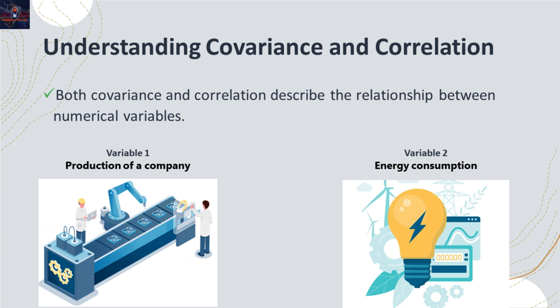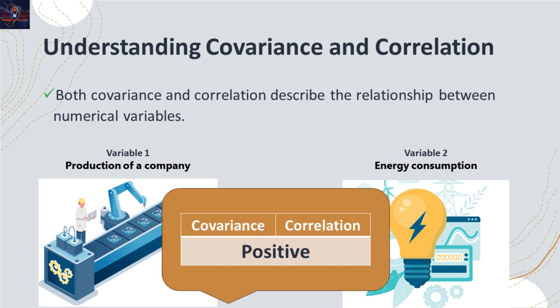How do you think these two variables are connected to each other? It's clear that as production increases, energy consumption also tends to increase, indicating a positive covariance and correlation.